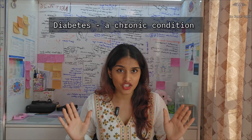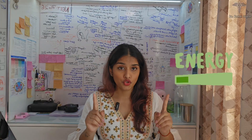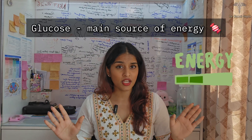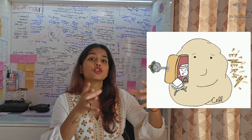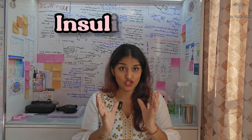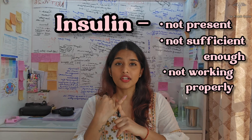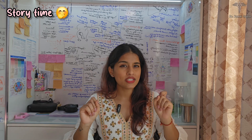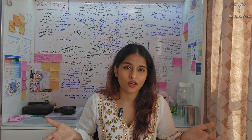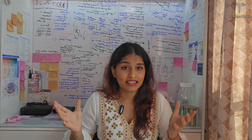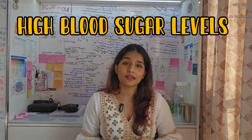Diabetes is a chronic condition where your body can't manage blood glucose or sugar levels properly. Glucose is the main source of energy, but it needs a key — and that key is insulin. Insulin helps glucose enter the cells. Think of glucose as a parcel and insulin as the delivery person. If there is no delivery person, or they are lazy and not working properly, then the parcels — that is, the glucose — keep piling up in your blood, causing high blood sugar levels.